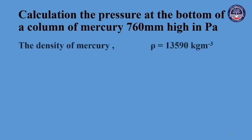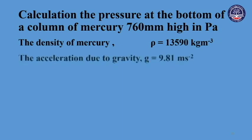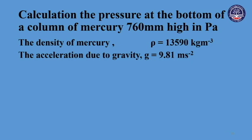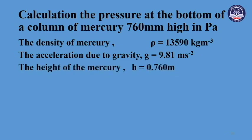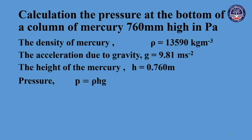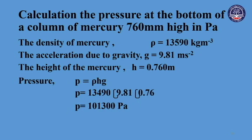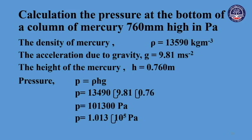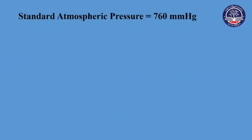The density of mercury is equal to 13,590 kg per cubic meter. The acceleration due to gravity is 9.81 meters per second squared. The height of the mercury column is 0.760 meters. The standard atmospheric pressure calculates to 1.013 times 10 to the power of 5 pascals.